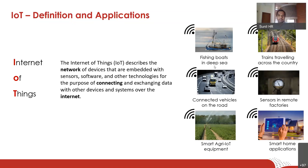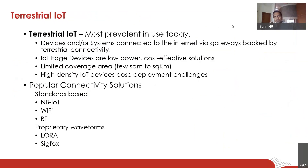Some of the applications of IoT systems are fishing boats in deep sea — a very practical application Sankhya is also working on — trains traveling across the country, connected vehicles on the road giving data on speed and emergency alerts, and agriculture, which is one of the pioneering things happening in the IoT space. When we talk about IoT generally, terrestrial IoT is what comes to mind first. It is very prevalent and in use today — almost any kind of IoT device you see today is a terrestrial IoT.